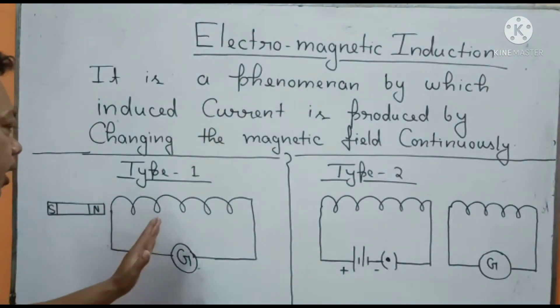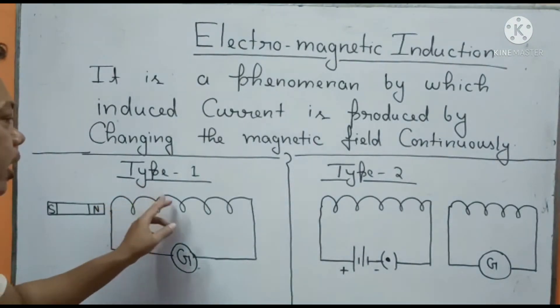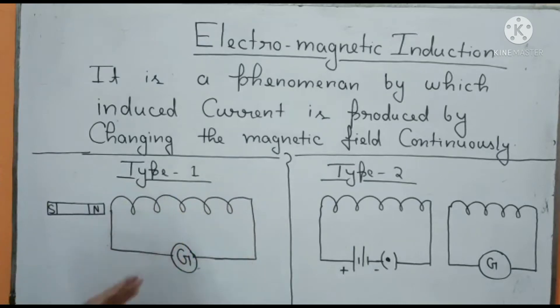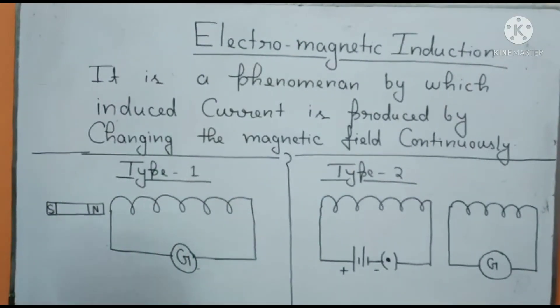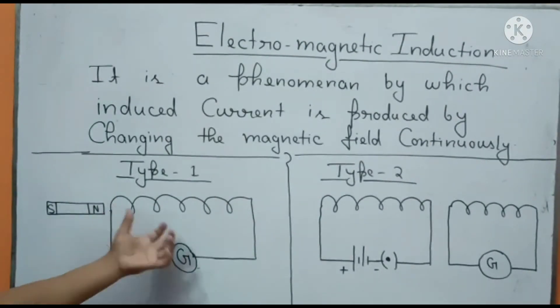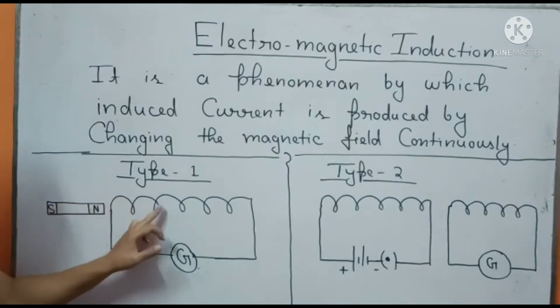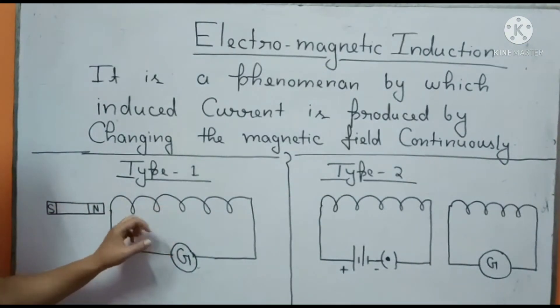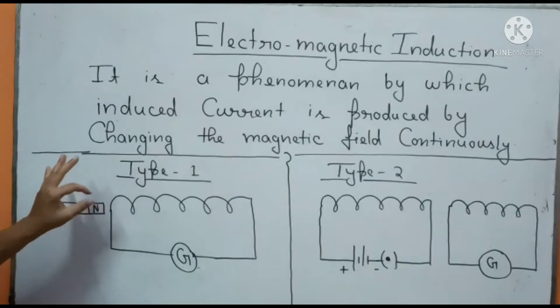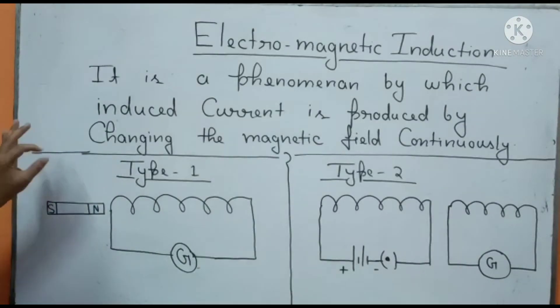This deflection of the galvanometer ensures that current is flowing through this coil. But where did this current come from? We haven't used any battery or other source. Current is coming because by inserting the magnet into the coil a magnetic field is being produced, and when we take it out that magnetic field is getting destroyed.